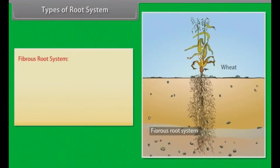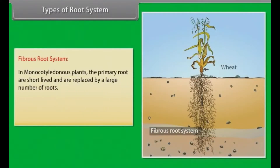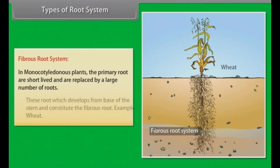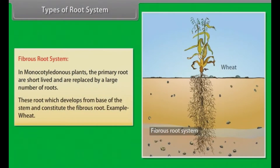Fibrous root system: In monocotyledonous plants, the primary roots are short-lived and are replaced by a large number of roots. These roots, which develop from the base of the stem, constitute the fibrous root. Example: wheat.